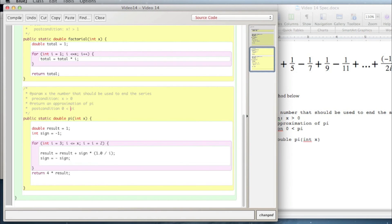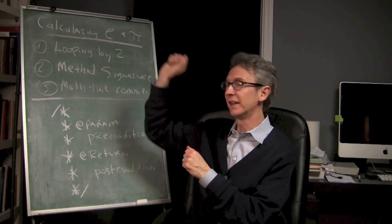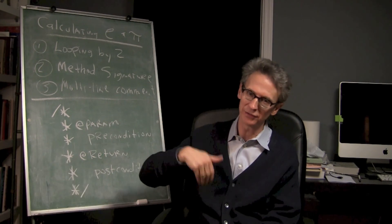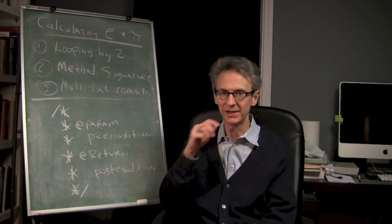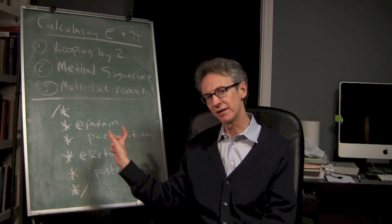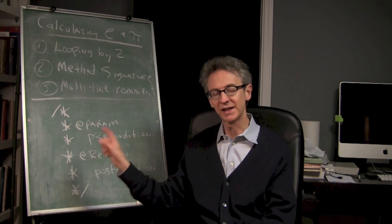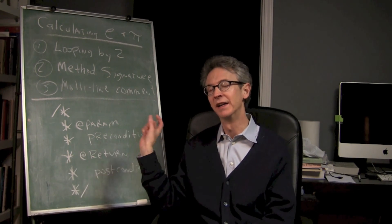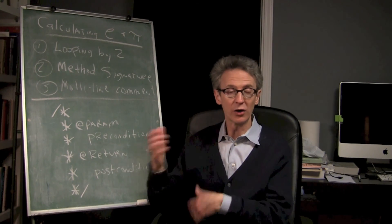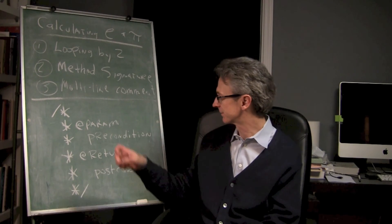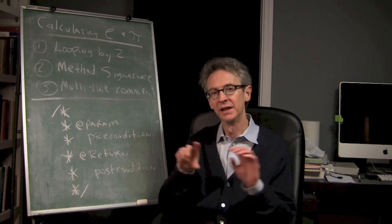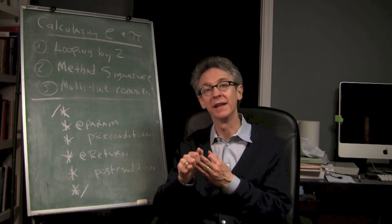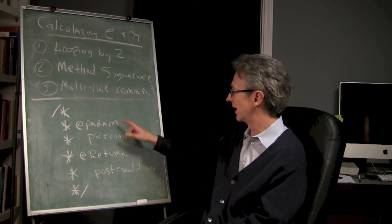Okay, let's go to the board and do a quick recap. Hope you thought that was kind of fun and interesting - calculating e and pi. So, looping by two - all you need to do, or looping by anything: looping by five, looping backwards by two, looping by some variable that keeps changing - basically in the for loop, the three parts, that third part where you're manipulating the loop control variable, you can say i equals i times two, plus two, plus one, minus one, minus two. You can do whatever you want in that third part. Method signature is basically a description of what the method is going to do - what it returns, the method header, what the parameters are, and the method name.